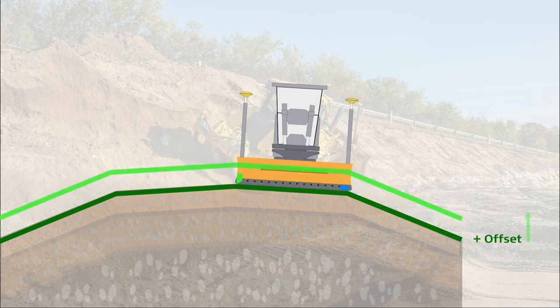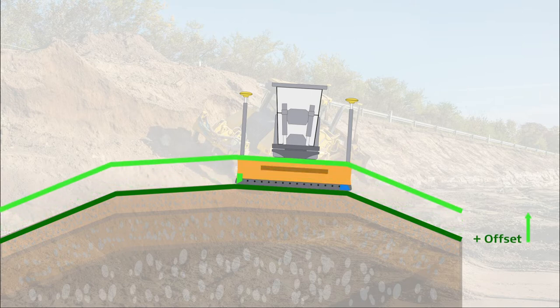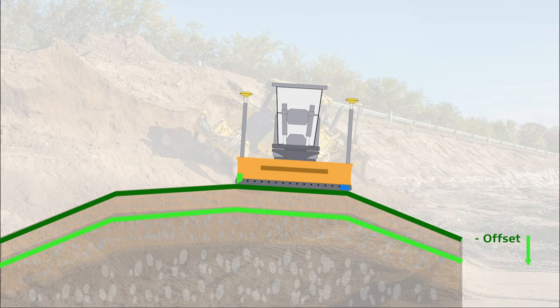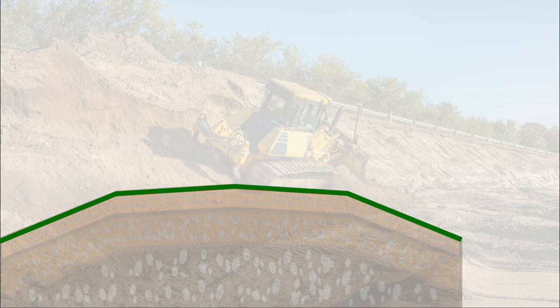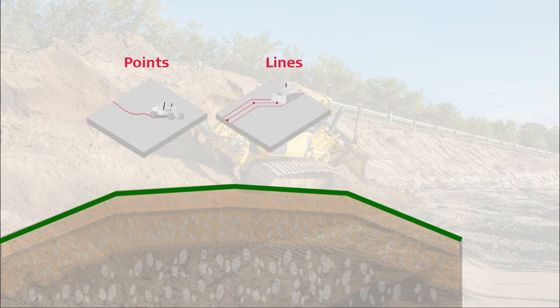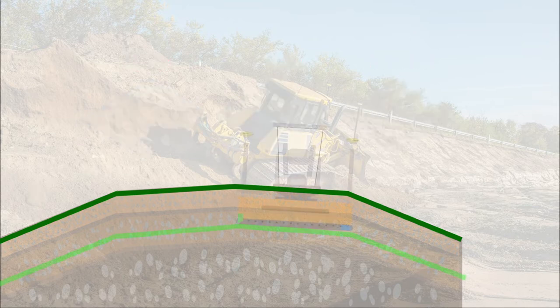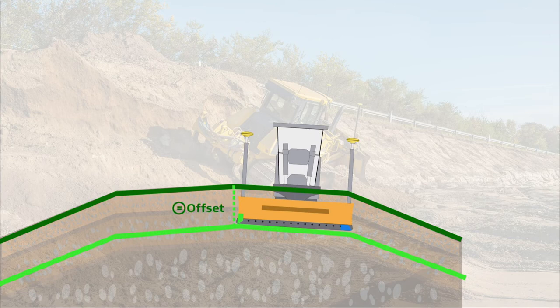The vertical distance between the chosen tool point and the offsetted line determines the cut-fill values. A positive offset value will push the reference line upwards and negative will push the reference line downwards. You can use points, lines, and surfaces as height references, and you can also set the offset to the current elevation of the height tool point using the equal sign.